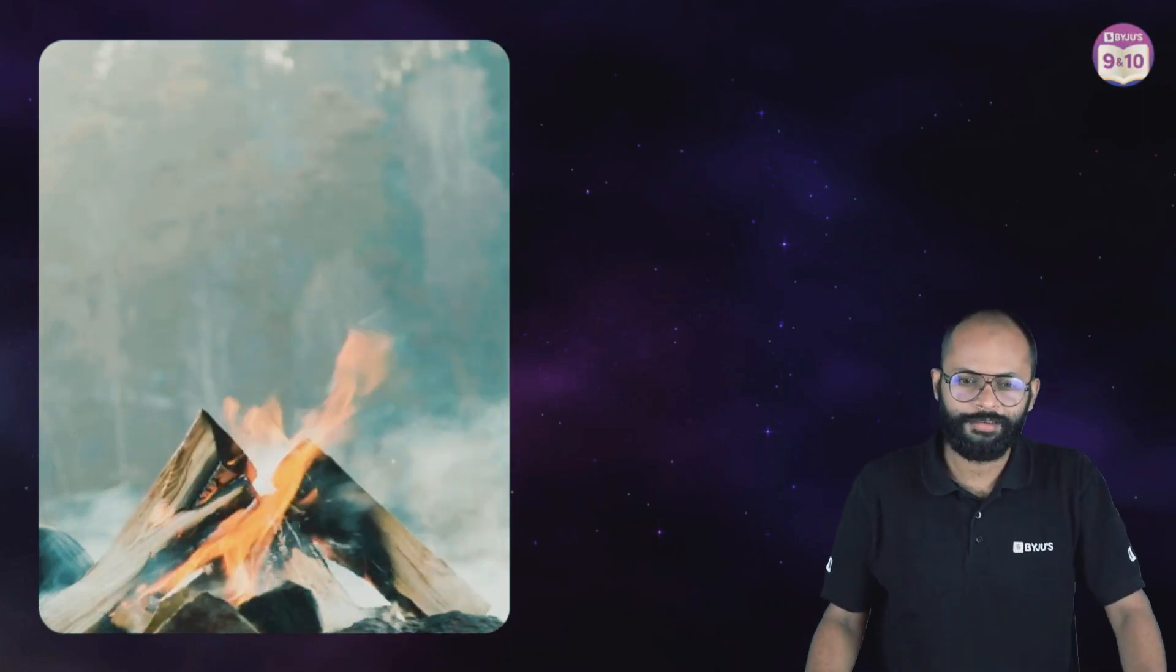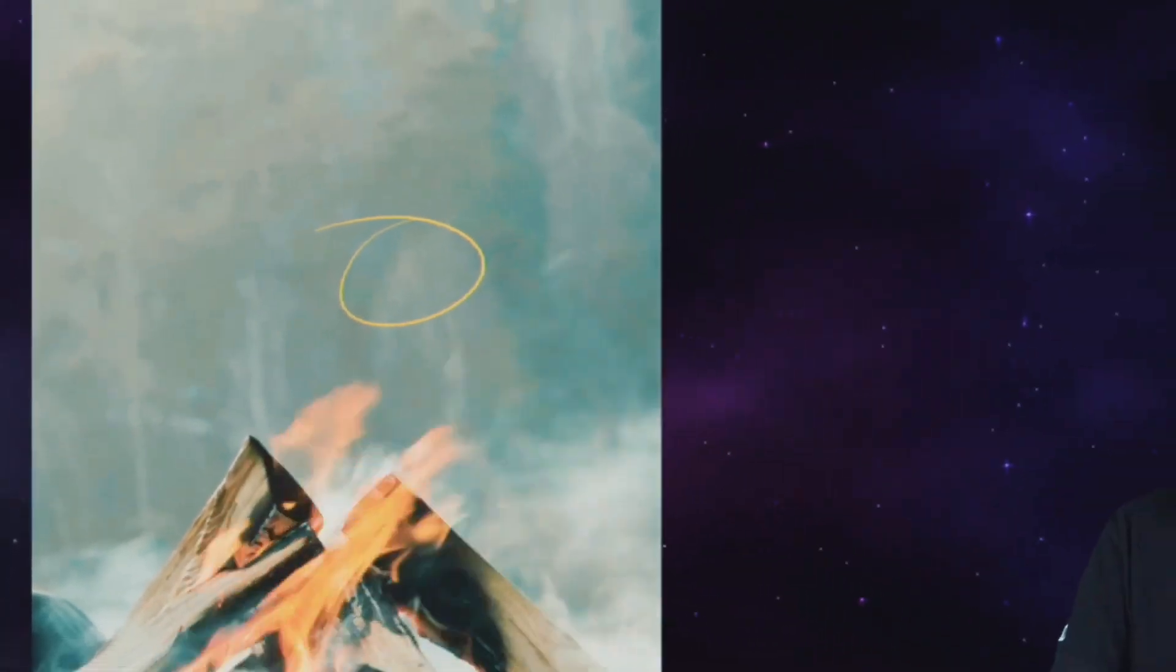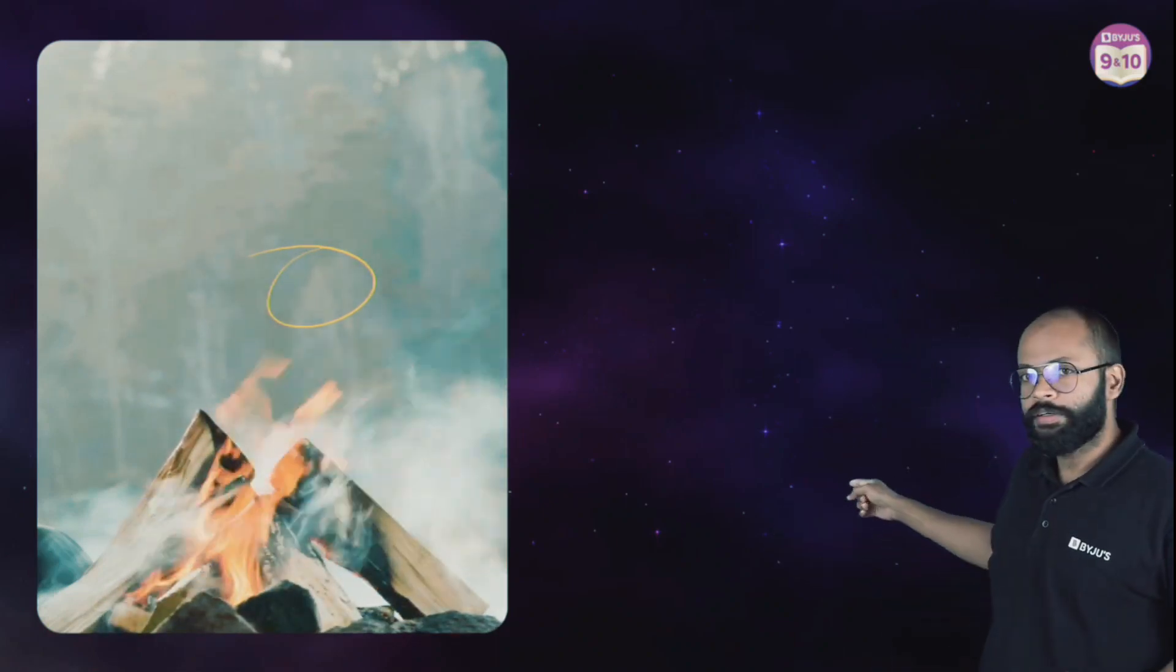If you understand this, that's the reason behind the twinkling of stars also. The person next to the bonfire directly opposite to you, their image is flickering. Why? How are you able to see something? Because light from that particular object is traveling through the medium and then reaching your eyes.